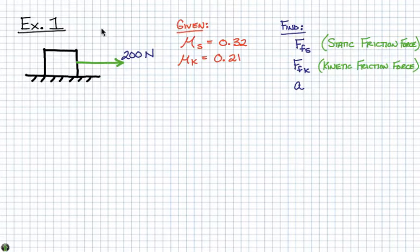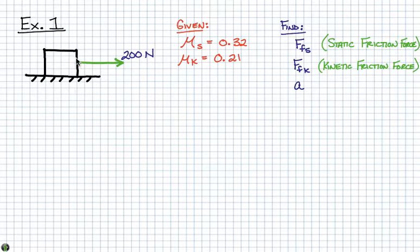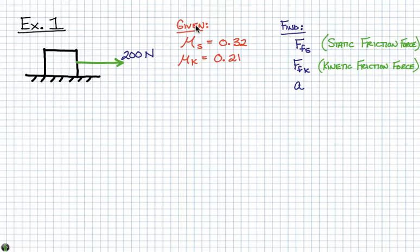In our first example, we have a block that is at rest on a flat surface, and there is an applied force of 200 newtons being applied to the right. We are given that the static coefficient of friction is 0.32.